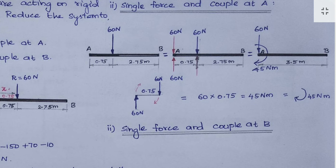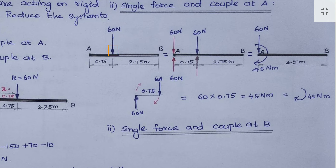This couple rotates in the clockwise direction. So these two forces are converted into a single clockwise couple of 45 Newton meter at point A. The remaining 60 Newton downward force stays at A. Comparing the first and final diagrams: moving the force from its location to point A introduces one couple. At point A, we applied two equal and opposite forces — one was used to form the couple, and the other remains as the single force.